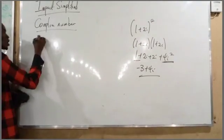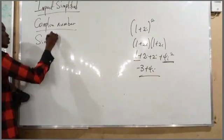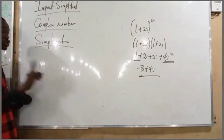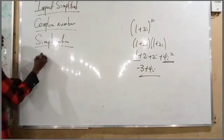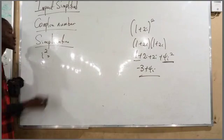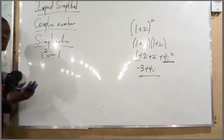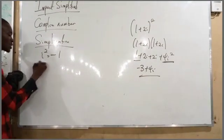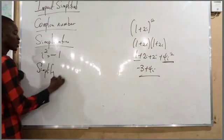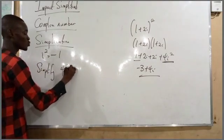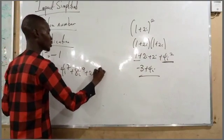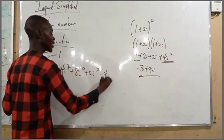The next thing under complex numbers is simplification. The basis is that i² equals minus 1. For example, simplify 4i raised to power 7 plus 8i raised to power 9 plus 2i raised to power 10 minus 4. We break everything down to i².